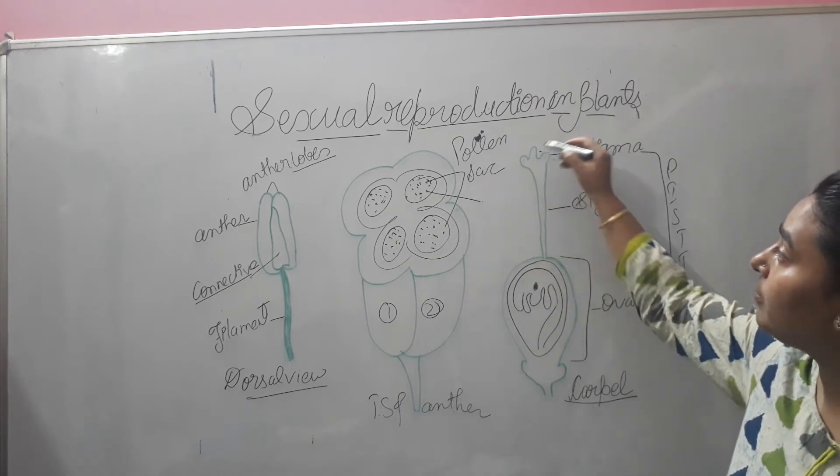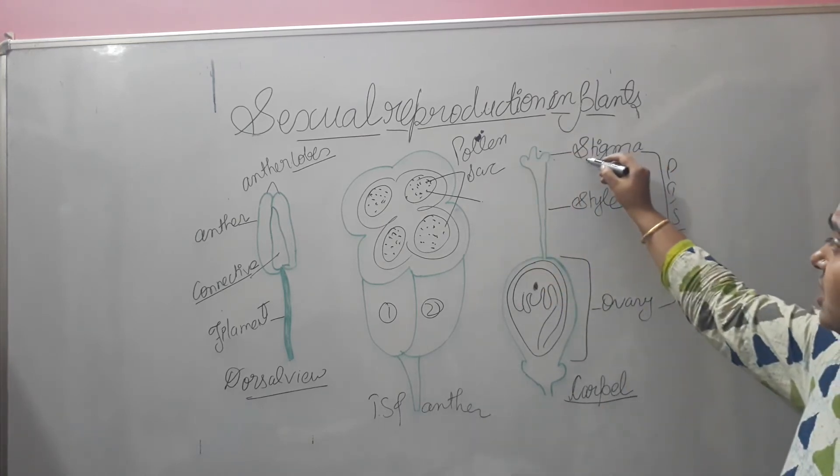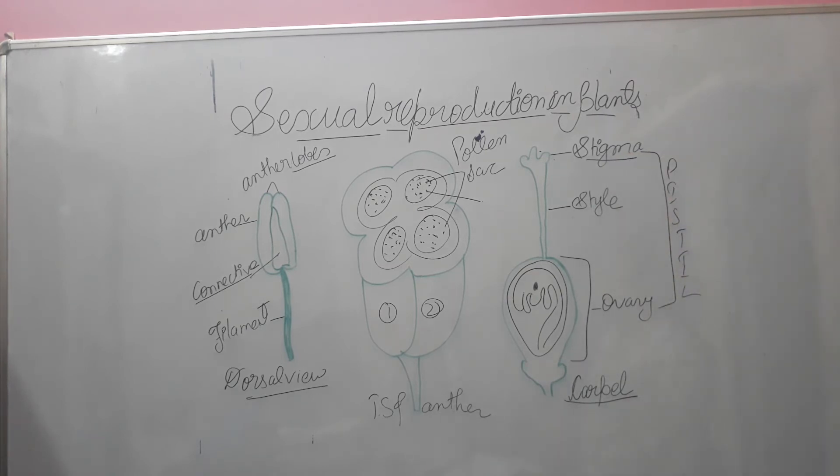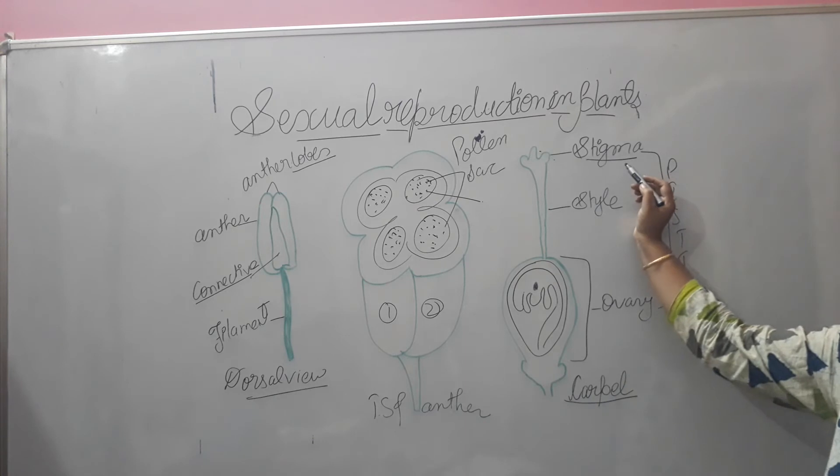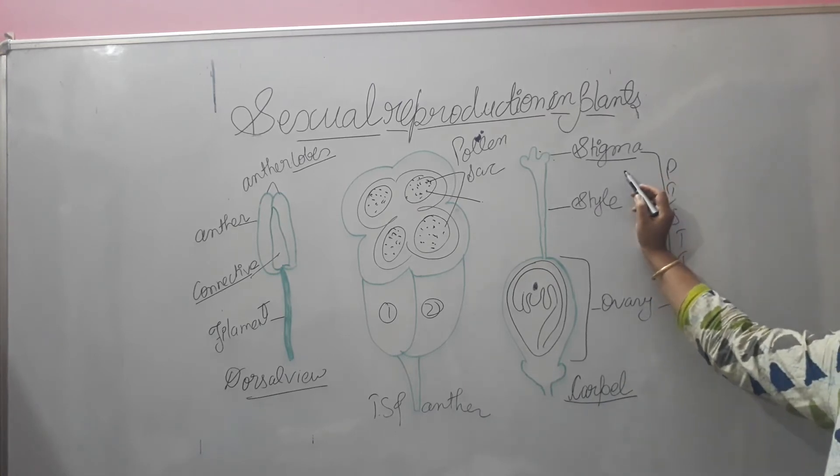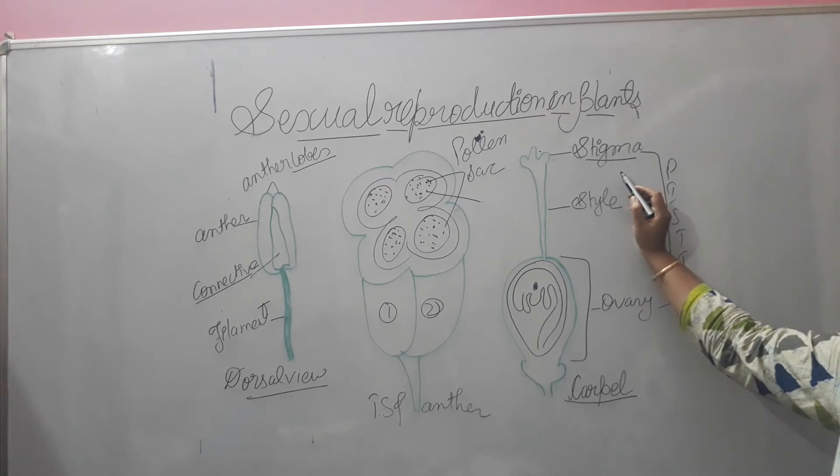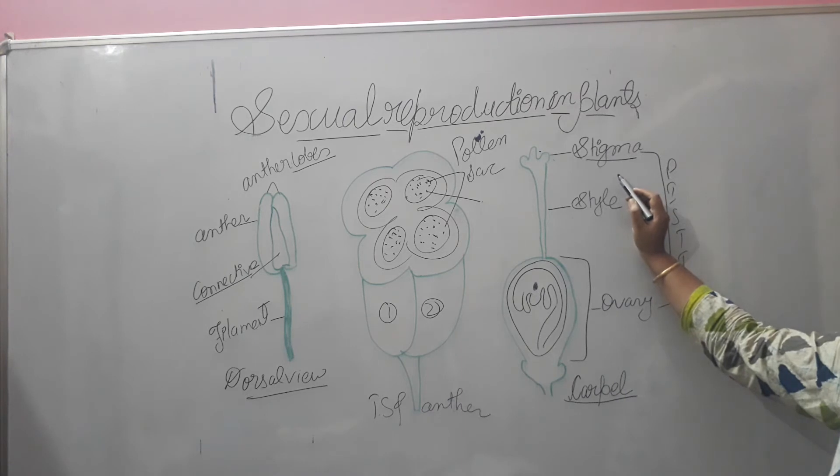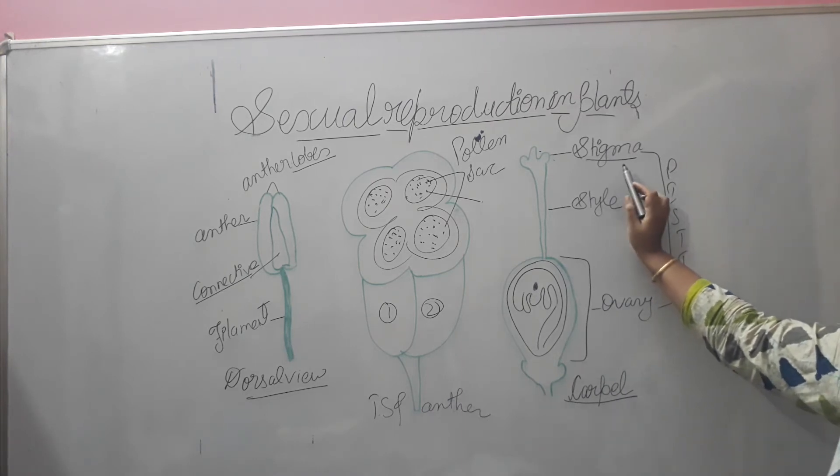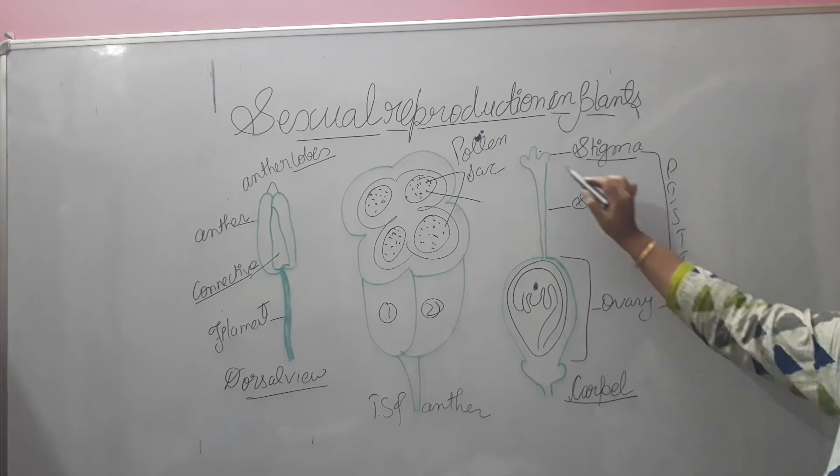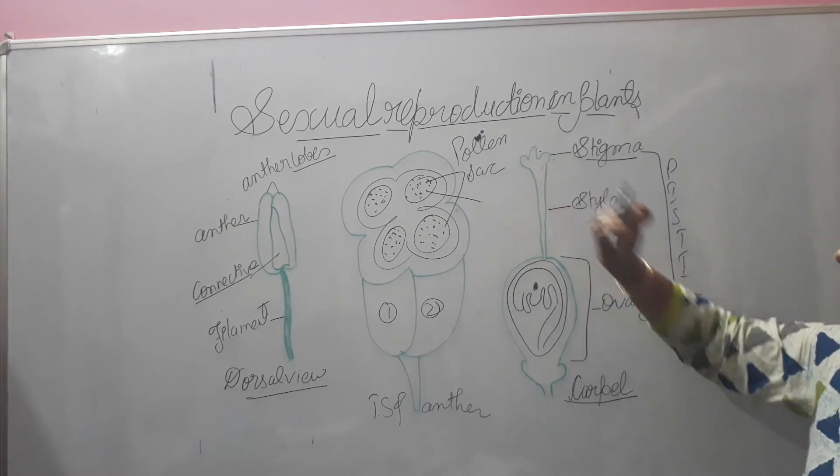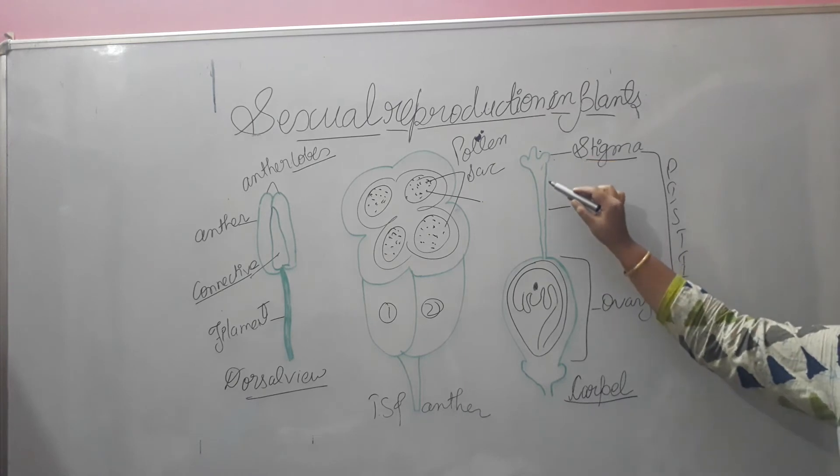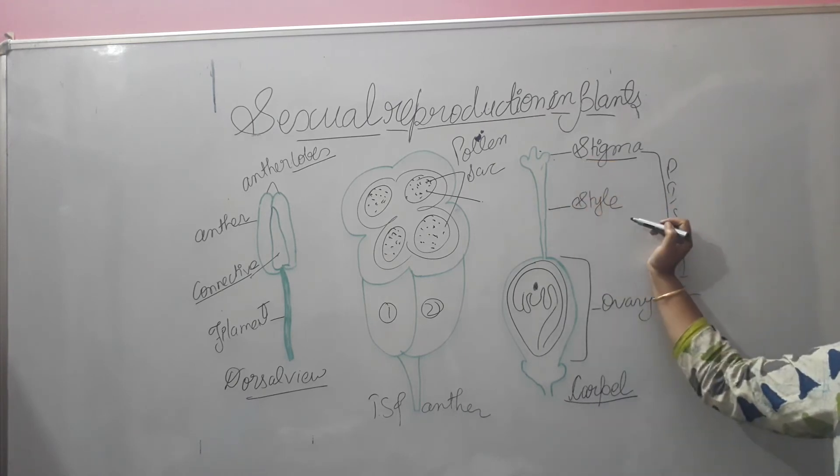Suppose this is the pollen, if it comes and lands over here, then the stigma is going to identify whether this particular pollen is of good quality or not, whether it is of its own species or not. If it is not, then it is going to be rejected and thrown away. But if it is of good quality and of the same species, then it is going to accept it.